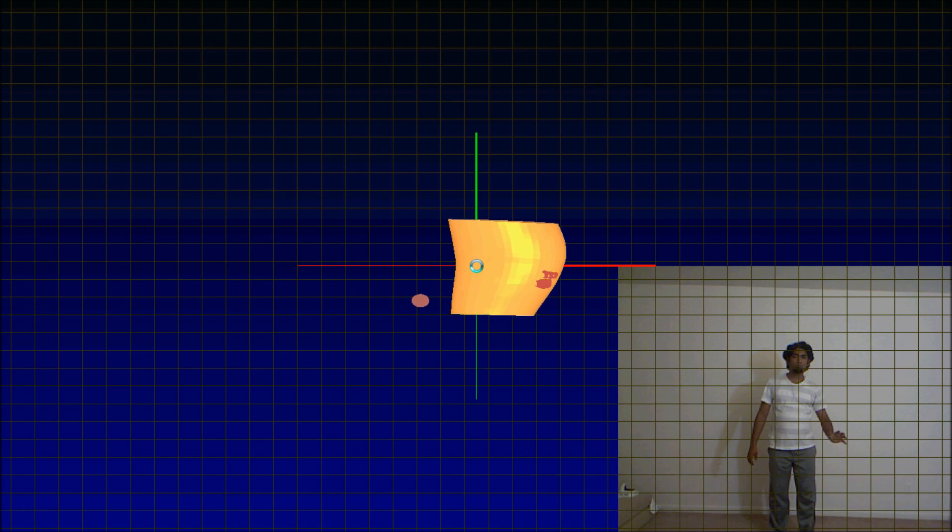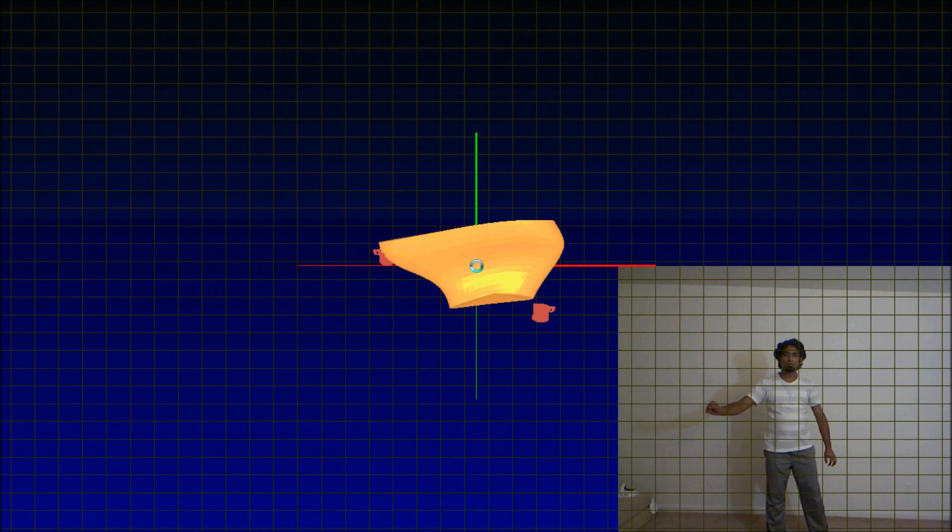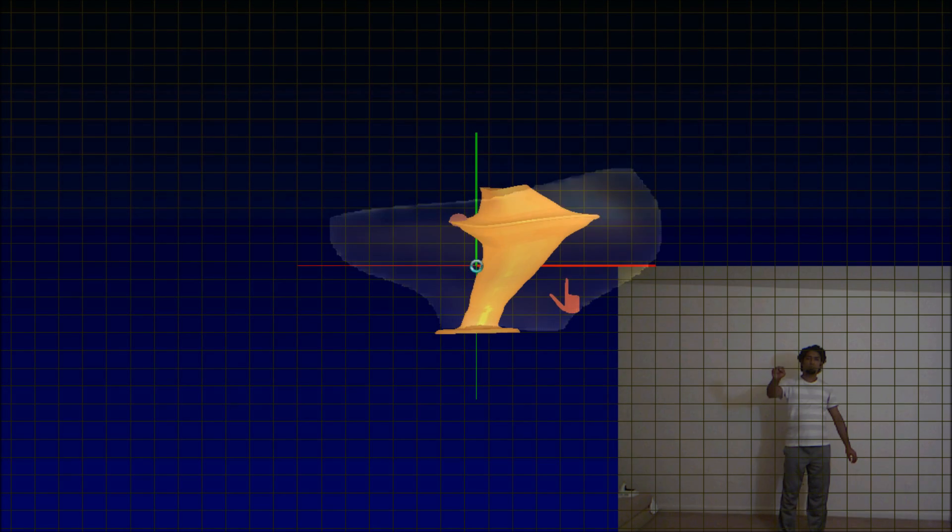This feature enables users to convert the symmetric shapes into free-form asymmetric shapes.